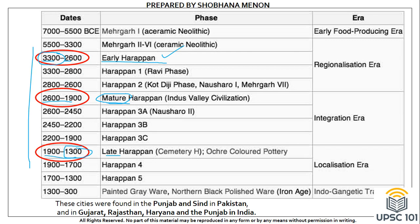When it comes to the distribution of the civilization, the concentration of the Harappan or Indus Valley Civilization was primarily in Pakistan and India. In Pakistan, settlements were dominated in the regions of Punjab and Sindh, while in India you could find Harappan settlements in the states of Gujarat, Rajasthan, Punjab and Haryana.